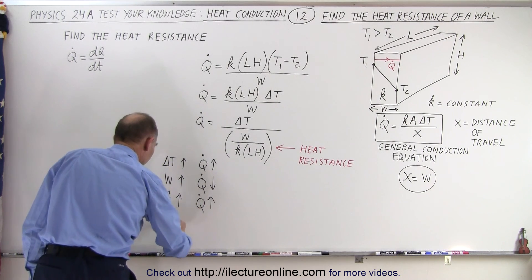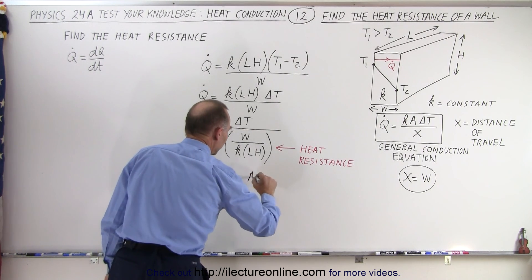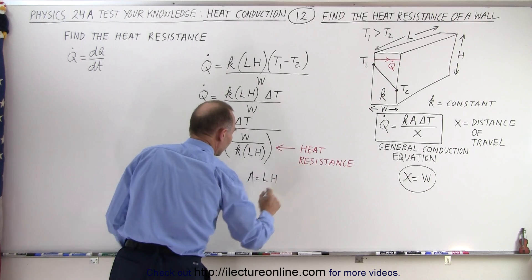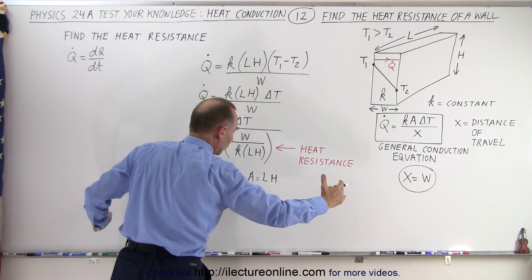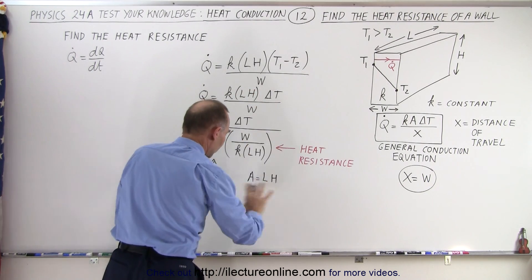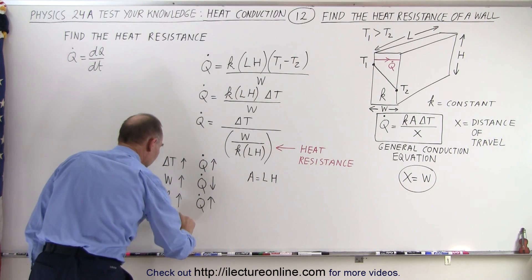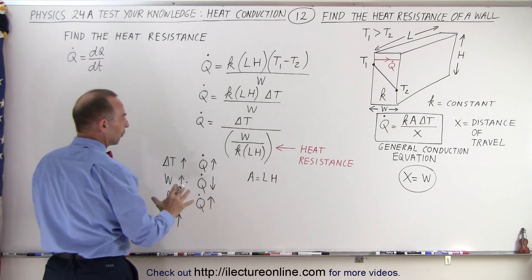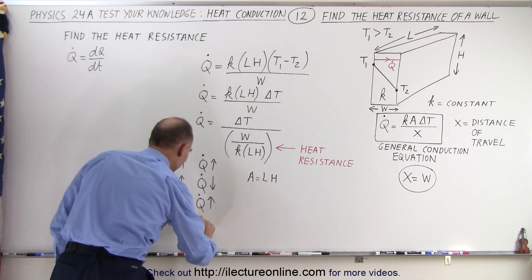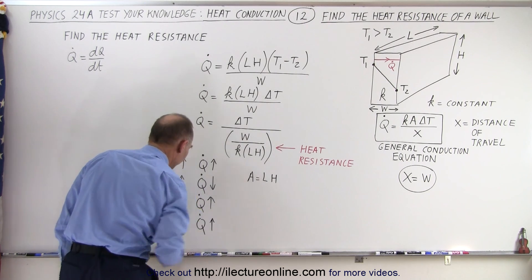What if the area goes up? So in this case, the area is equal to the length times the height. So the length of the wall times the height of the wall is the cross-sectional area of the wall. So if area goes up, then we have a bigger surface for heat to travel through. That means that Q will go up as well.